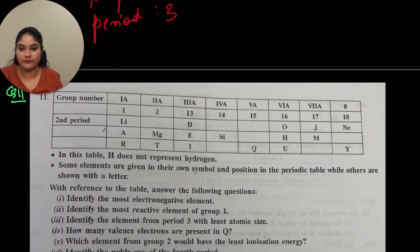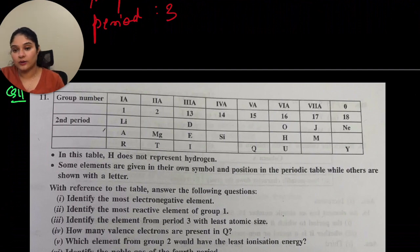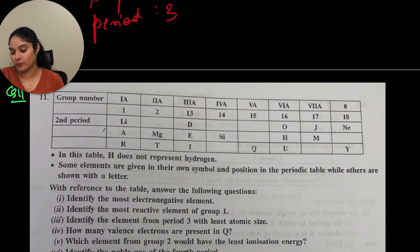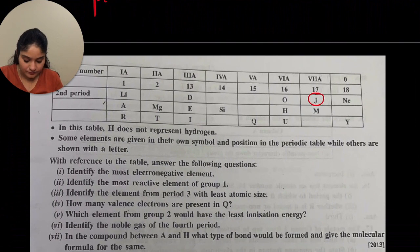Very important question — these type of questions show up a lot. A periodic table is given with group numbers and period numbers. In the second period you have lithium, O, J, N, E shown. Note: H does not represent hydrogen here; some elements are given in their own symbol while others are shown with a letter. Identify the most electronegative element — it will be at the position of chlorine, which is J.